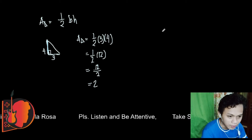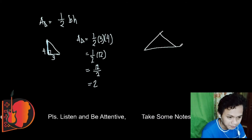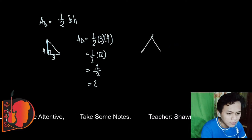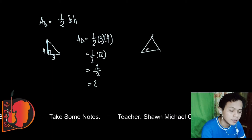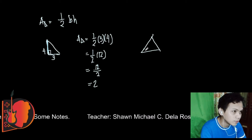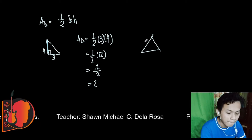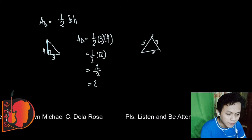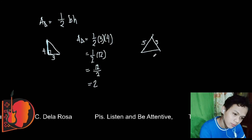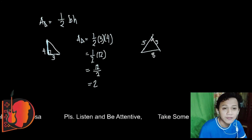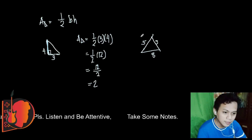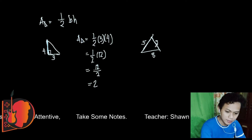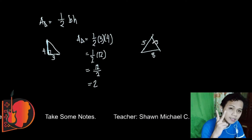For example, we have an isosceles triangle. Isosceles means two sides are equal. Let's say the two equal sides are 5 and 5, and the base is 8.